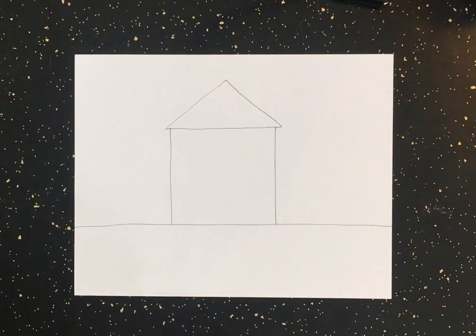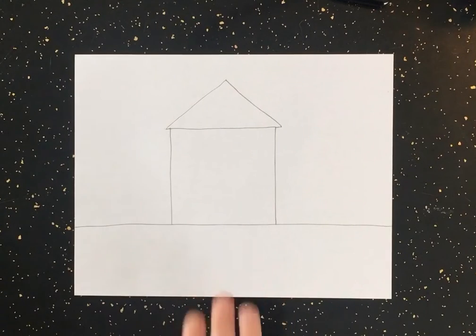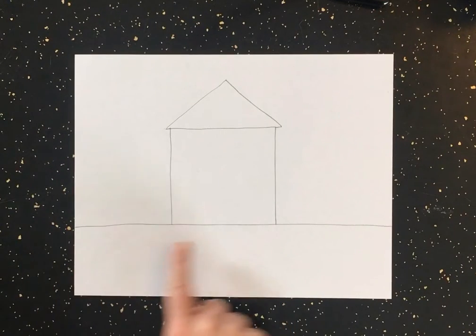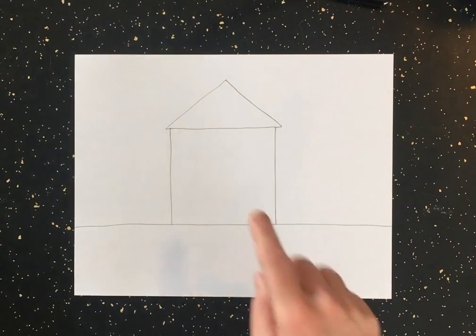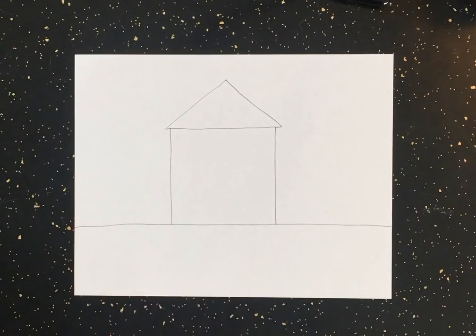Once you have your simple house shapes drawn on top of that line that you're going to use to create your yard, I want you to think about a couple things. Do you want your house to be a little house? Do you want your house to be a big house? Maybe you want to add different things onto the sides of your houses. Maybe you want a mansion. That's up to you.